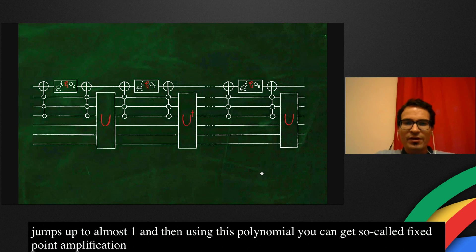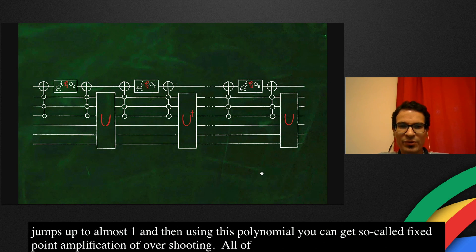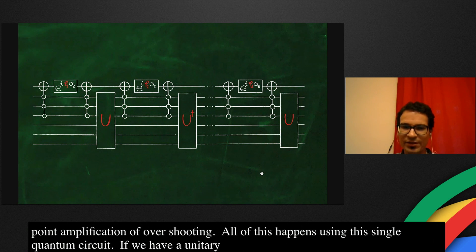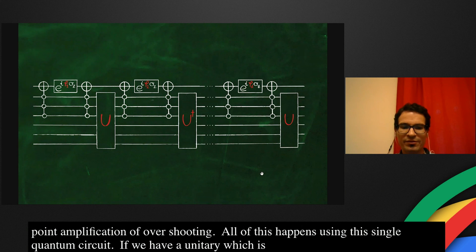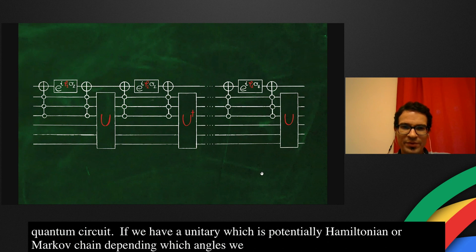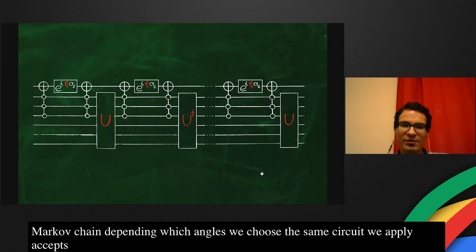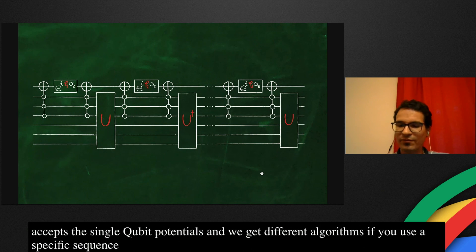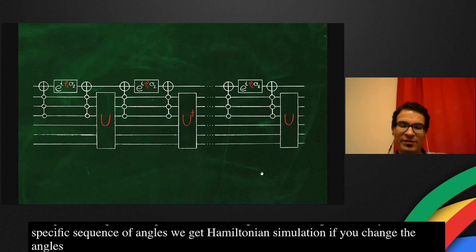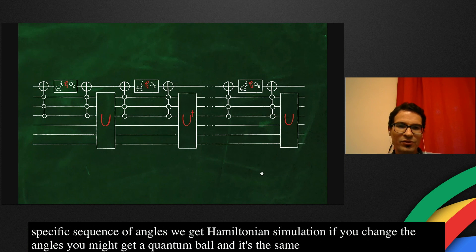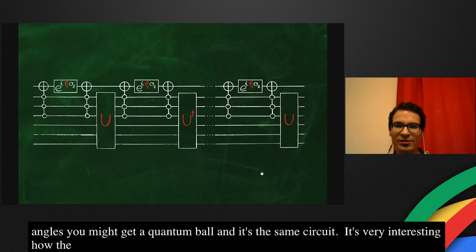All of this happens using this simple quantum circuit. If we have a unitary which is potentially a Hamiltonian or some Markov chain, then depending on which angles we choose, the same circuit we apply except these single qubit rotation angles, and then we get very different algorithms. If we use a specific sequence of angles, we get Hamiltonian simulation. If we change the angles, we might get a Gibbs sampler. If we again change the angles, we might get a quantum walk. And it's the same circuit. So it's very interesting how these single qubit rotations change the landscape of the whole algorithm and the whole quantum circuit.